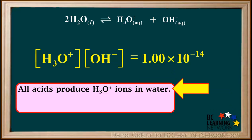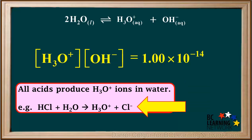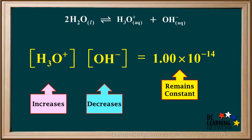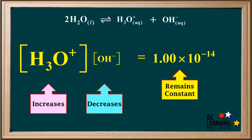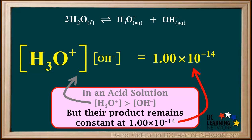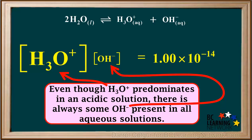Remember that all acids produce hydronium ions when they are added to water. For example, when the strong acid HCl is added to water, it completely ionizes to form hydronium and chloride ions. Let's add some acid to a sample of water to increase the hydronium ion concentration. We see that as hydronium ion concentration increases, hydroxide ion concentration must decrease in order to keep their product constant. In an acid solution, the concentration of hydronium is greater than the concentration of hydroxide, but their product remains constant at 1×10⁻¹⁴. It is important to realize that even though hydronium predominates in an acidic solution, there is always some hydroxide present in all aqueous solutions.